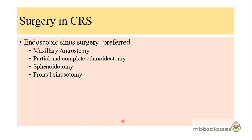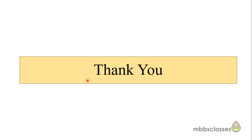Open sinus surgeries have largely given way to endoscopic sinus surgery, which is now the preferred method for chronic rhinosinusitis. The type of surgery depends on the extent of disease and parts of the nose and paranasal sinuses involved. Commonly performed surgeries include maxillary antrostomy, partial and complete ethmoidectomy, sphenoidotomy, and frontal sinusotomy.